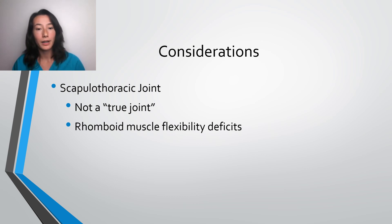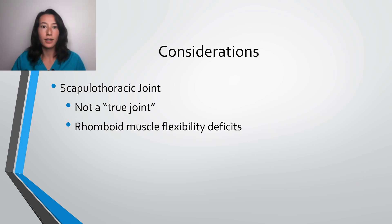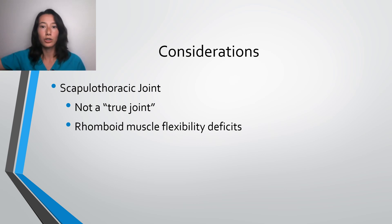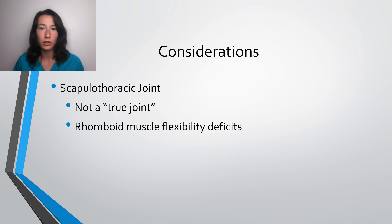I wanted to talk a little bit more about the scapulothoracic joint. Consider your rhomboid muscle — when the rhomboids are activated, they induce both scapular retraction and downward rotation. However, in shoulder abduction we need upward rotation to actually get the arm up there. If your rhomboids are tight, they do the exact opposite, and your scapula will be limited in its ability to do its job and achieve that full range of motion. This is an exact reason why, even though the scapulothoracic joint is not considered a true joint, it has to be assessed to see what is going on with what our patient is presenting with.